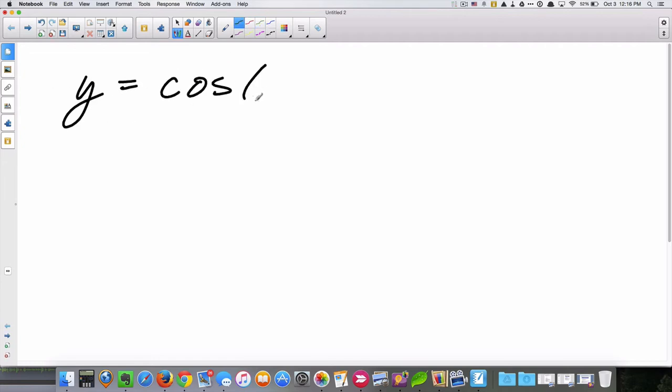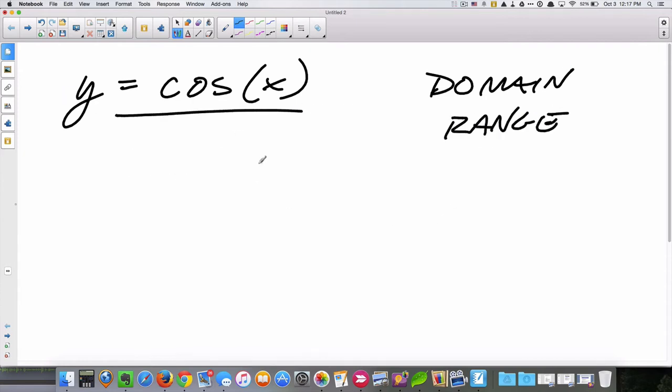We're going to work on the graph and function y equals cosine x, and then we're going to talk a little bit about domain and range of both of these functions, y equals cosine x, and the previous video we talked about y equals sine x. So let's take a look at this guy right now.